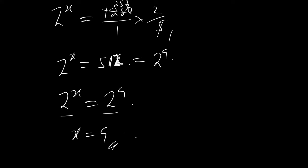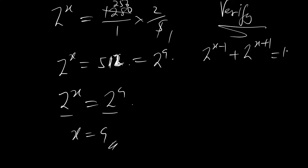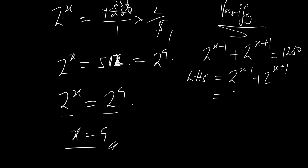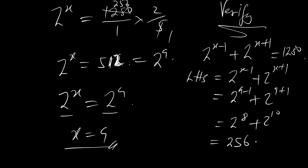Now let's verify. You have 2 to the power x minus 1 plus 2 to the power x plus 1 equal to 1280. Looking at the left hand side, since x is equal to 9, we substitute: 2 to the power 9 minus 1 plus 2 to the power 9 plus 1 gives us 2 to the power 8 plus 2 to the power 10. Now 2 to the power 8 gives you 256, and 2 to the power 10 gives you 1024. Adding them together: 256 plus 1024 equals 1280. It's correct.